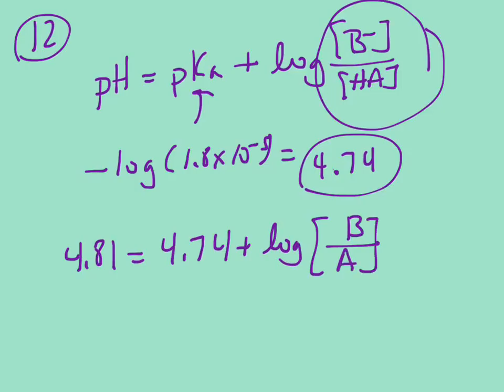So if you solve for that, don't forget you got to do inverse log. We're going to get that the difference is 0.07 equals the log of the concentration of B over A. So now we're going to have to do inverse log, which means we're going to take that to the power.